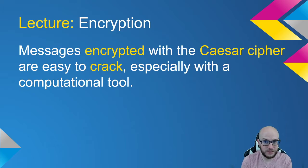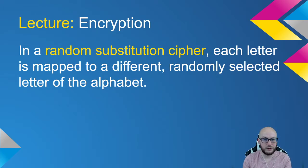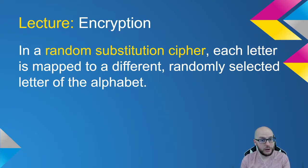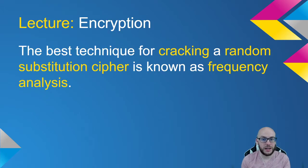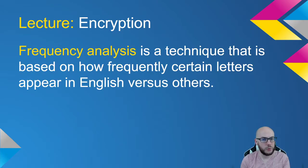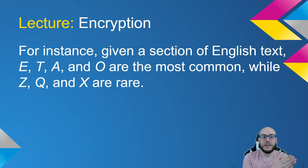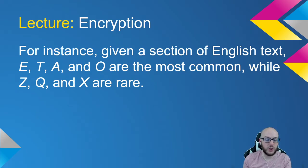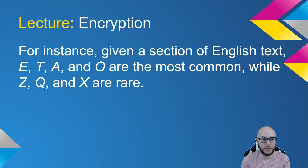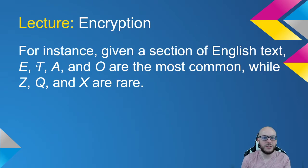We then talked about substitution cipher — random substitution cipher — where we effectively assign each letter to something else randomly. This is better, but still not great, because with frequency analysis we can basically go through and figure out what the message actually says. For instance, E, T, A, and O appear most often in the English alphabet. So whatever letter occurs most frequently in the cipher text is probably an E; the second most frequent is probably a T. So this is better than Caesar cipher, but still not great.